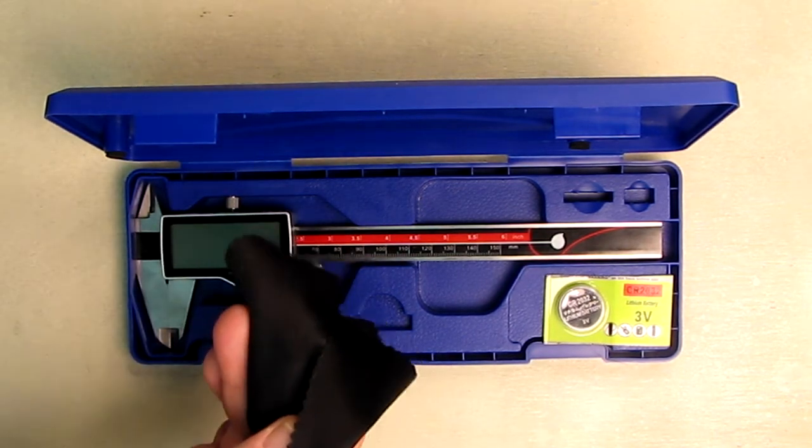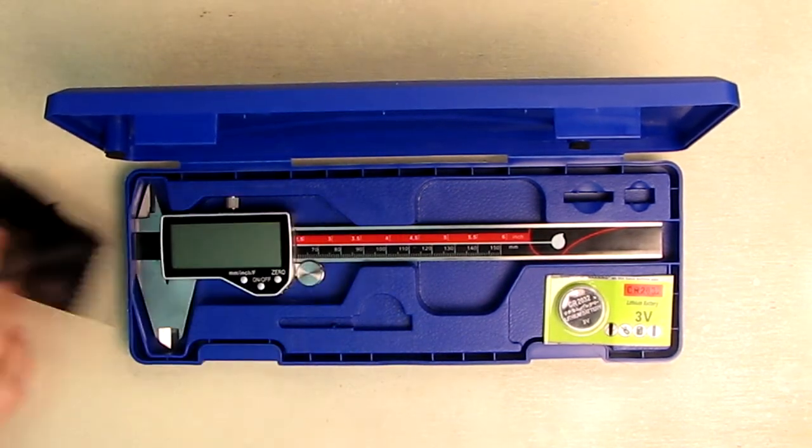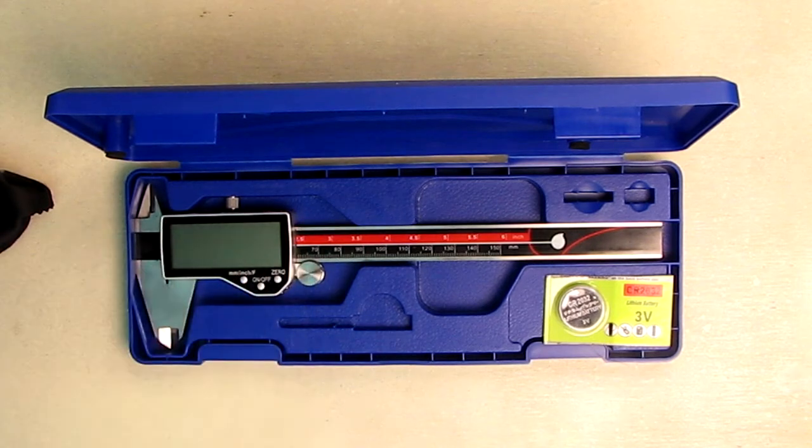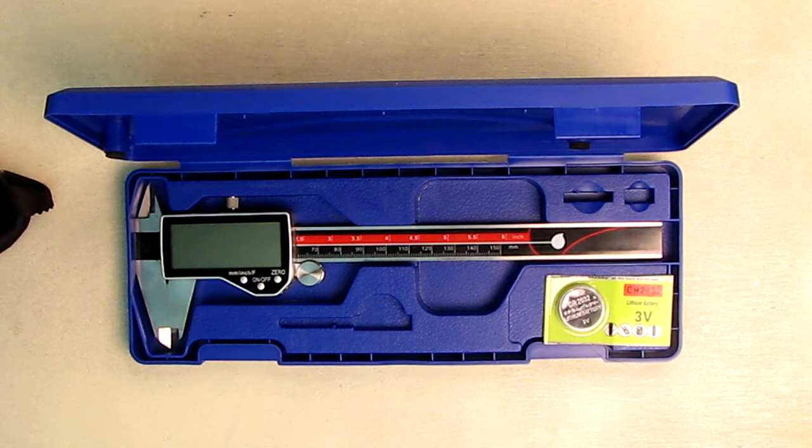They include a little cloth that you can use to keep this wiped down. This measures ranges from 0 to 6 inches or 0 to 150 millimeter and is accurate to within 0.001 of an inch or 0.02 millimeter. The resolution is 0.005 inch or 0.01 millimeter.